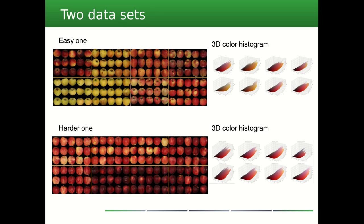Thanks to the method explained, we have built two datasets, each consisting of eight or nine varieties and visible on this slide, with a 3D histogram of each of them. The first dataset is a simpler one, with varieties very different from each other. The second one is more complex since the varieties are very similar.